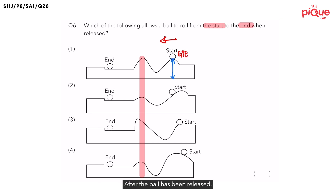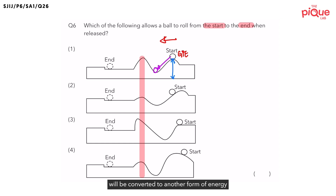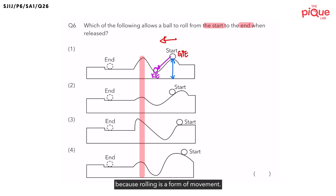After the ball is released, it will roll downhill to the left until the bottom of the hill. At this point, gravitational potential energy will be converted to another form of energy as the ball is rolling down. When the ball is rolling down, gravitational potential energy will be converted to kinetic energy because rolling is a form of movement.